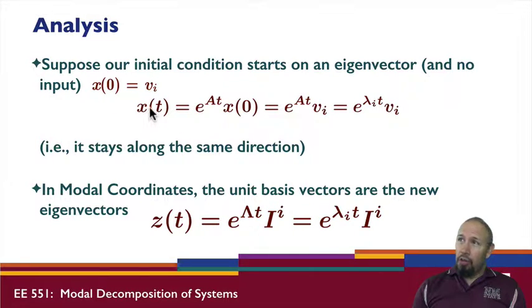If I pick the initial condition to be any point along that line, then for an unforced system, x(t) equals e^(At) times the initial condition. The initial condition is that eigenvector, and because it satisfies the eigenvalue relationship and the spectral mapping theorem, I have this.